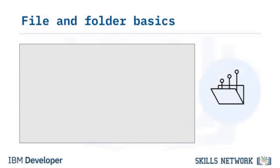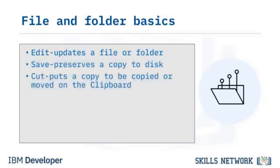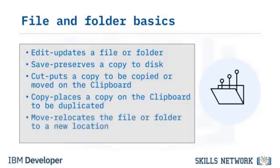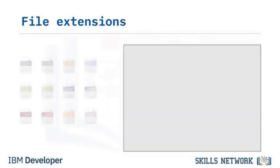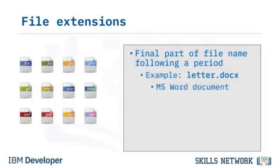Folders separate the OS and application files from user data and organize user data belonging to different accounts. In Windows, there's no limit to the number of subfolders you can create. A file path, also known as the path name, is the precise location of a file, device, folder, or web page. For example, C:\Windows\System32 tells the user that the System32 folder is in the Windows folder in the C drive. In Windows, you can choose from commands including Edit, Save, Cut, Copy, and Move to manage files and folders.